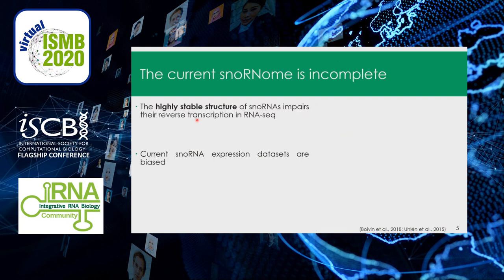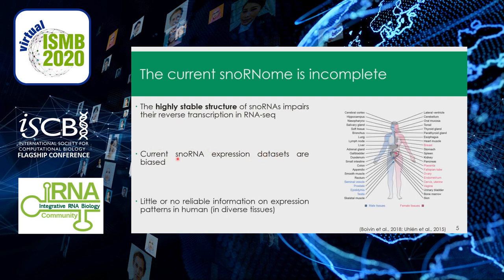As I mentioned, the structure of snoRNAs is highly stable. This impairs their reverse transcription in RNA-seq and thus impairs their quantification. So we can say that the current snoRNA expression datasets are biased. In fact, in the literature there is little or no reliable information on expression patterns of snoRNAs in humans, for example in diverse tissues, so the current snoRNAome is incomplete.